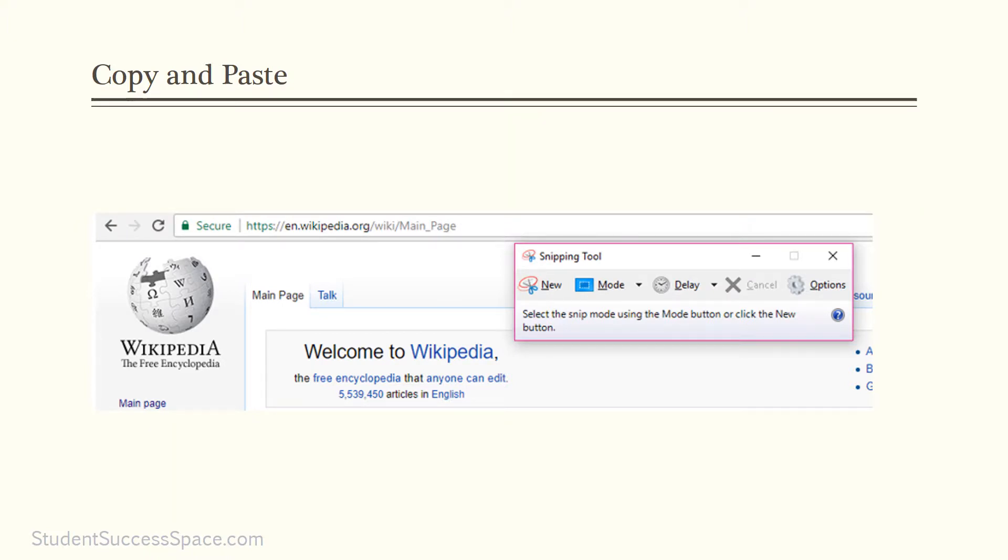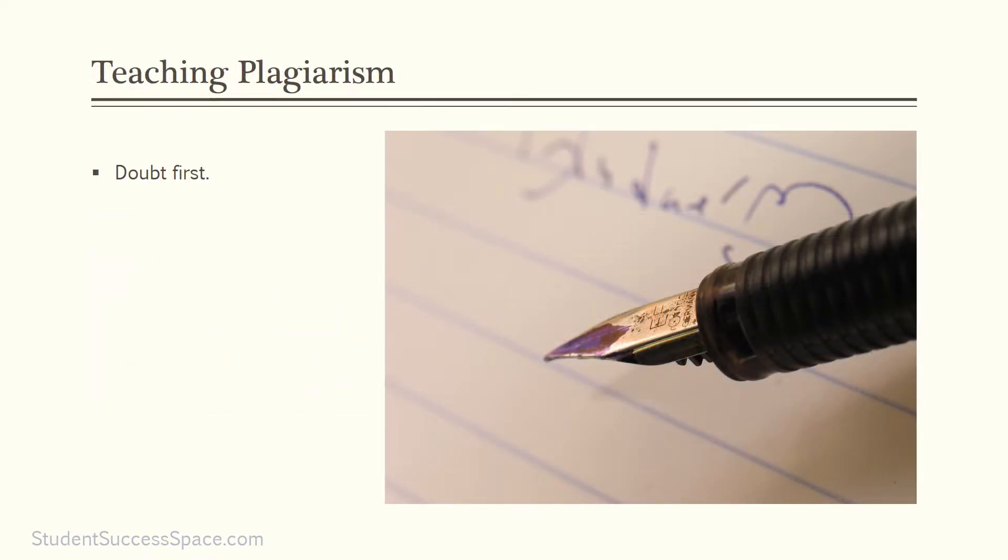The best result to finding plagiarism is to simply teach the student the meaning. Before all else, doubt first. Ask the student if they really understand plagiarism and have them define what it means.